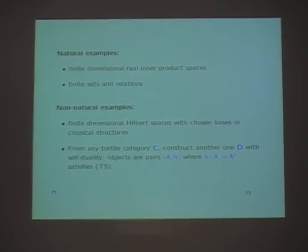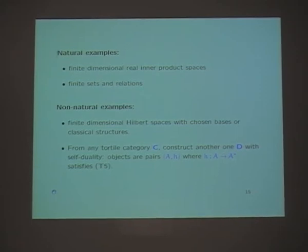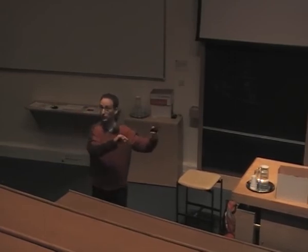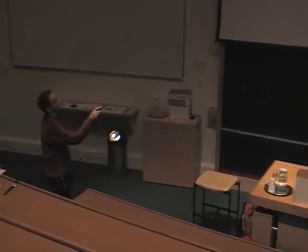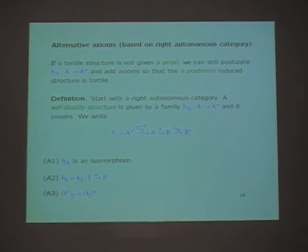There are natural examples where objects are automatically equipped with self-duality, and non-natural ones where you have to equip it somehow artificially. You can do that for any tortile category: make a new category where the objects are pairs of an object of the old category and its self-duality structure. Then the question is just whether you find a tensor or not, and it turns out that the obvious thing works. Now, I said in the beginning that if we started with just an autonomous category — no braiding or anything — and required self-duality, we would automatically get something that looks like a braiding and something like a twist. So we can also do the axioms in a different way, starting a priori with just an autonomous category, then imposing this family of maps, and writing down axioms so that the structure will be tortile.